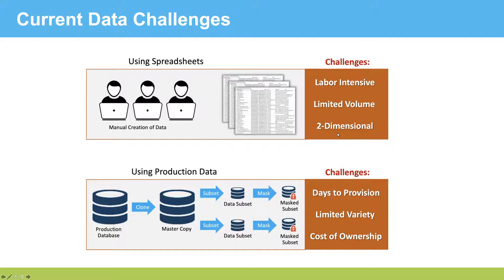Real world data is n-dimensional. And production data, while useful and real, can take time to provision and can be very expensive to have the resources and staff to go and pull that data and look for the right data that you need within it. There's still limited variety because quite often the data doesn't exist in the production data set.